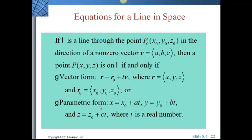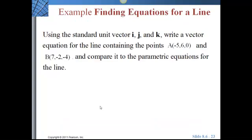For equations of lines in space, we're going to find the equations and compare them to parametric forms. Using standard unit vectors i, j, and k, we want to write a vector equation for the line containing points A(−5, 6, 0) and B(7, −2, −4), then compare it to the parametric equations for the line.